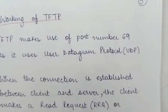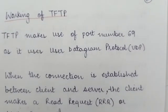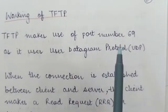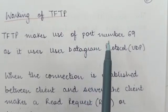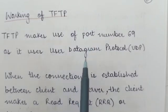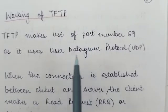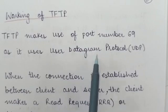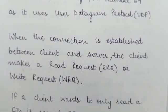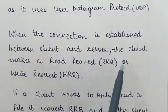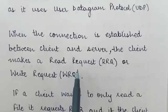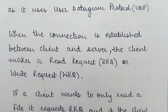Now let's look at the working of TFTP. TFTP makes use of port number 69, as already discussed, and it uses the services of the User Datagram Protocol, that is UDP. When the connection is established between the client and the server, the client makes a read request or write request.